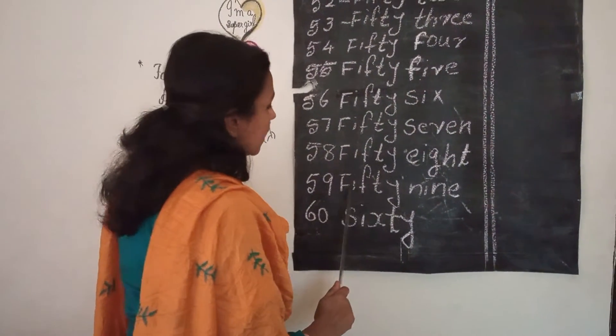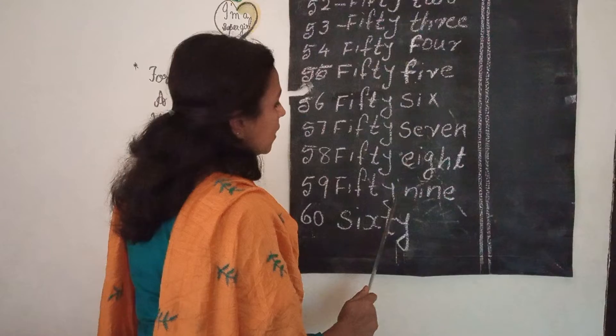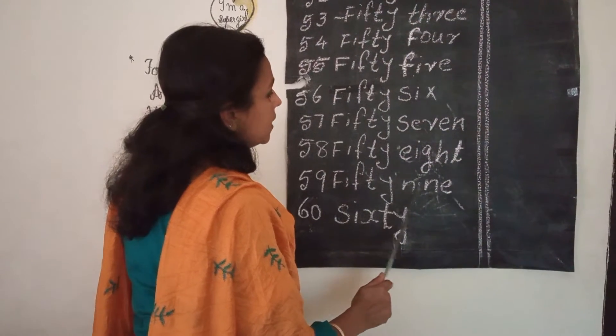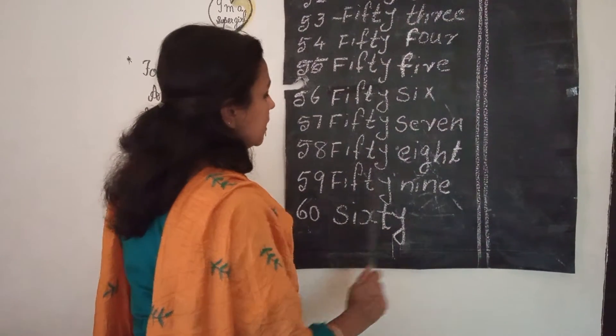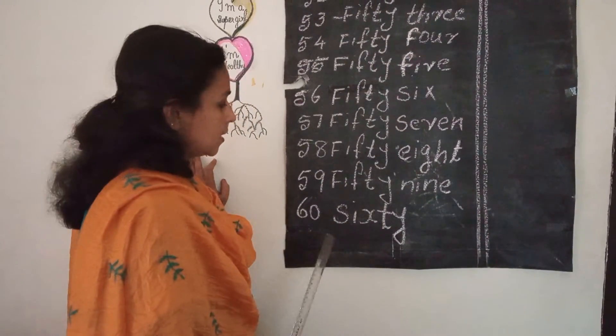59 — spelling: F, I, F, T, Y, N, I, N, E. Fifty-nine.